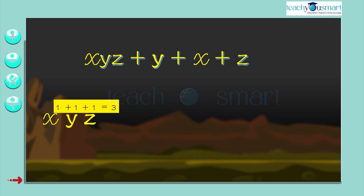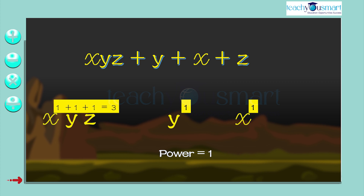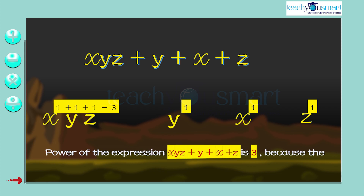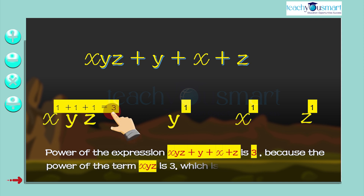In the term y, the power is 1. In the term x, the power is 1. And also in the term z, the power is 1. So the power of the expression xyz plus y plus x plus z is 3, because the power of the term xyz is 3, which is the highest power.